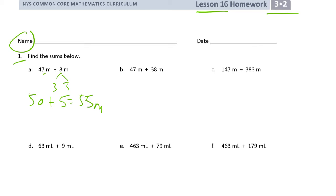And that's all you need to show for your mental process there. This 38 here is pretty close to 40. So let's think of this 47 as a 2 and a 45. So it's going to be 45 plus 40 is 85. And that's meters.